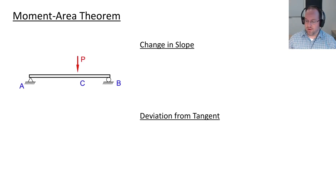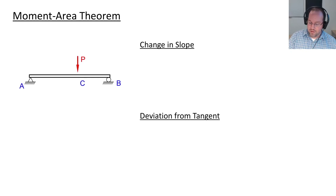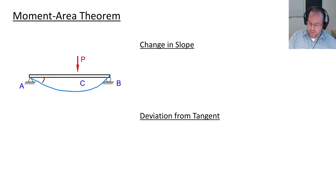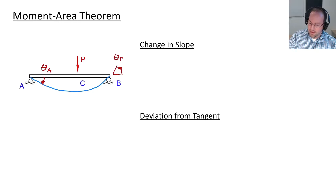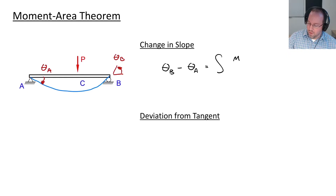If we take the first integral, that's going to tell us something about the slope of our beam. Let's take this beam and deflect it some distance due to load P, looking at the slope of the two sides — the rotation at A and at B. If we want to look at the change in that slope between B and A, we look at the integral under our curvature diagram. The curvature is just given by your moment diagram divided by EI, integrating from A to B over DX.